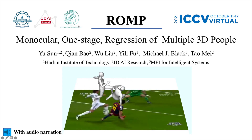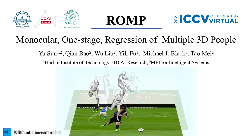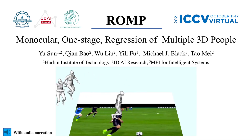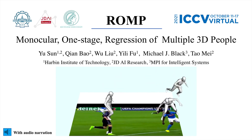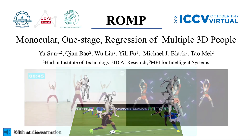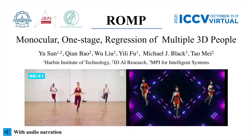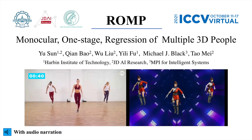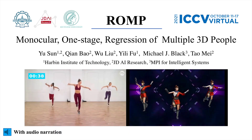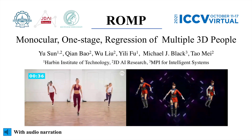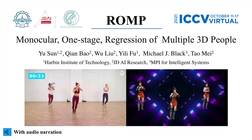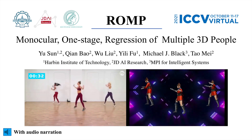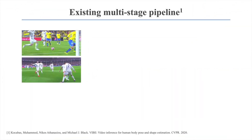We introduce ROMP, a one-stage method for regressing multiple 3D people from a single image. With only a single RGB camera, ROMP captures the 3D poses and motions of all people in the scene. This goes beyond work on single-person capture, enabling many applications.